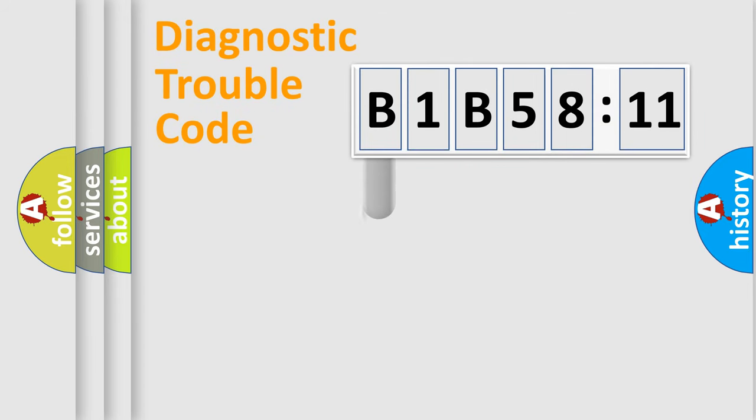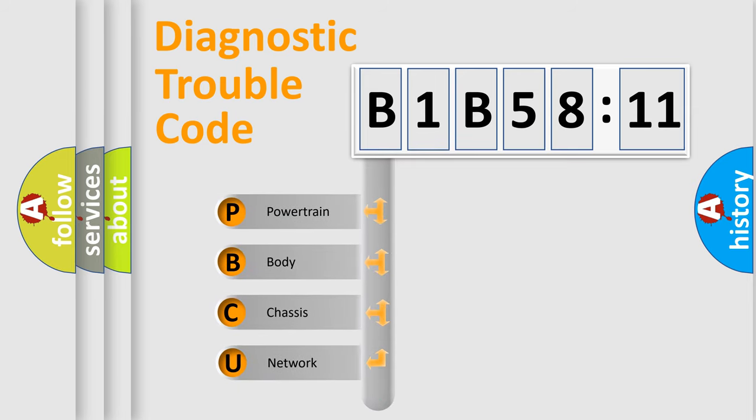First, let's look at the history of diagnostic fault code composition according to the OBD2 protocol, which is unified for all automakers since 2000. We divide the electric system of automobile into four basic units.